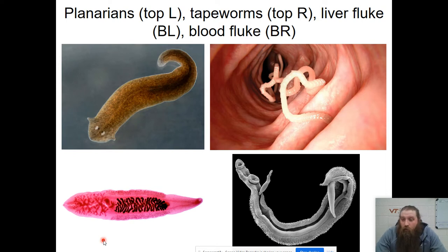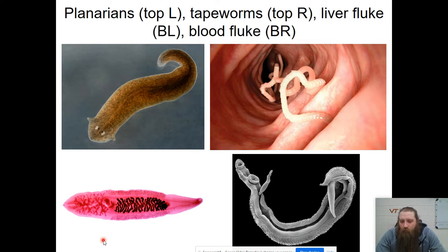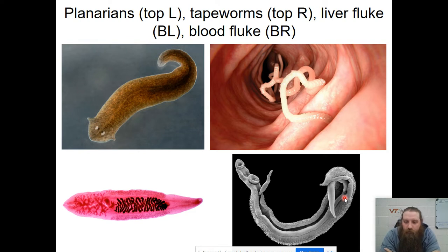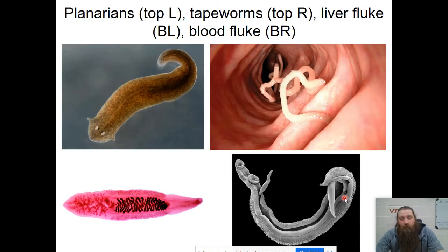Some of these are gross as we get into the parasites. On the left we have a planarian. On the top right we have a tapeworm in the intestine. Bottom left is a liver fluke, and bottom right is a blood fluke — actually two flukes. The larger one shaped like a hot dog bun is the male, and the smaller one is the female. He's kind of cupping the female and they just hook up, live together, and produce thousands of little eggs. Not a pleasant parasite to have.